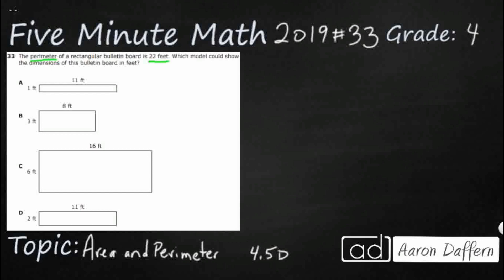Now remember, if we're looking at a rectangle, area is on the inside. So if we ever are asked for area, that is how many square units are on the inside. It's the perimeter that is on the outside. I always think of the word "rim" — that is inside the word perimeter — it makes me think of a basketball rim, how it's got that middle circle on the outside. And that's what we're looking for.